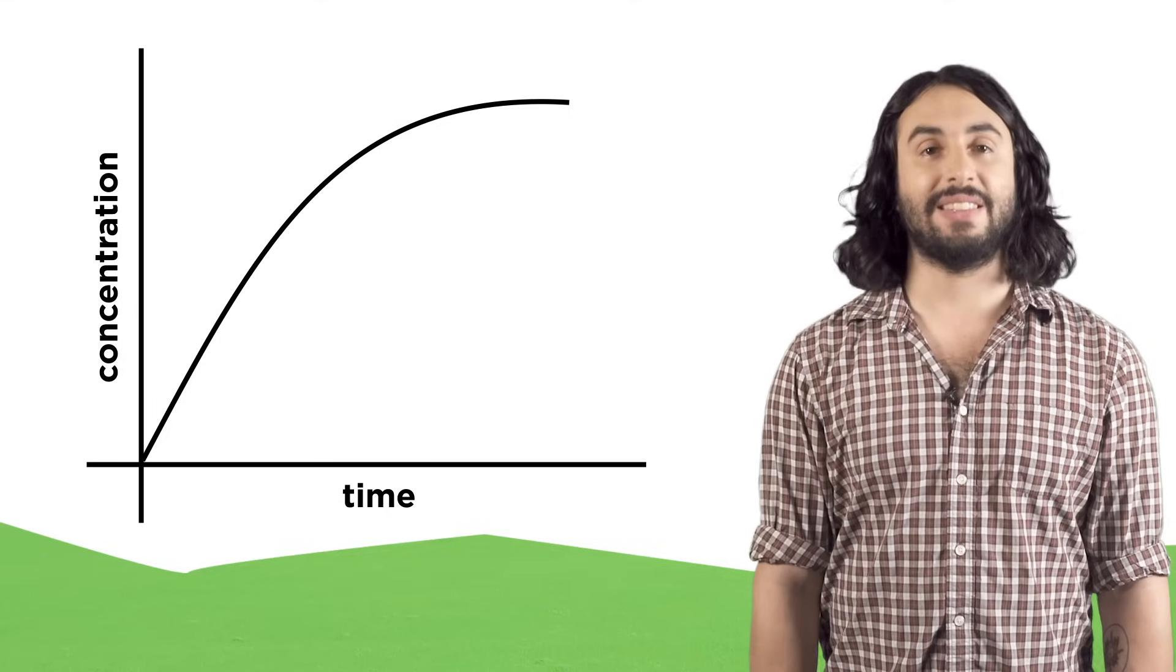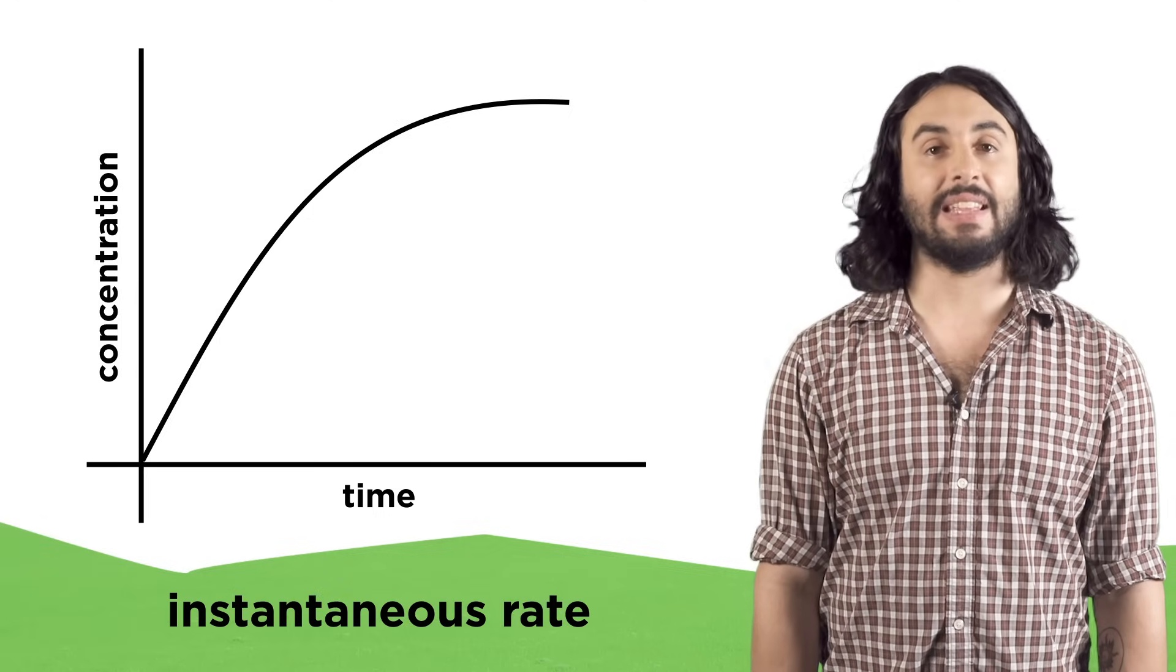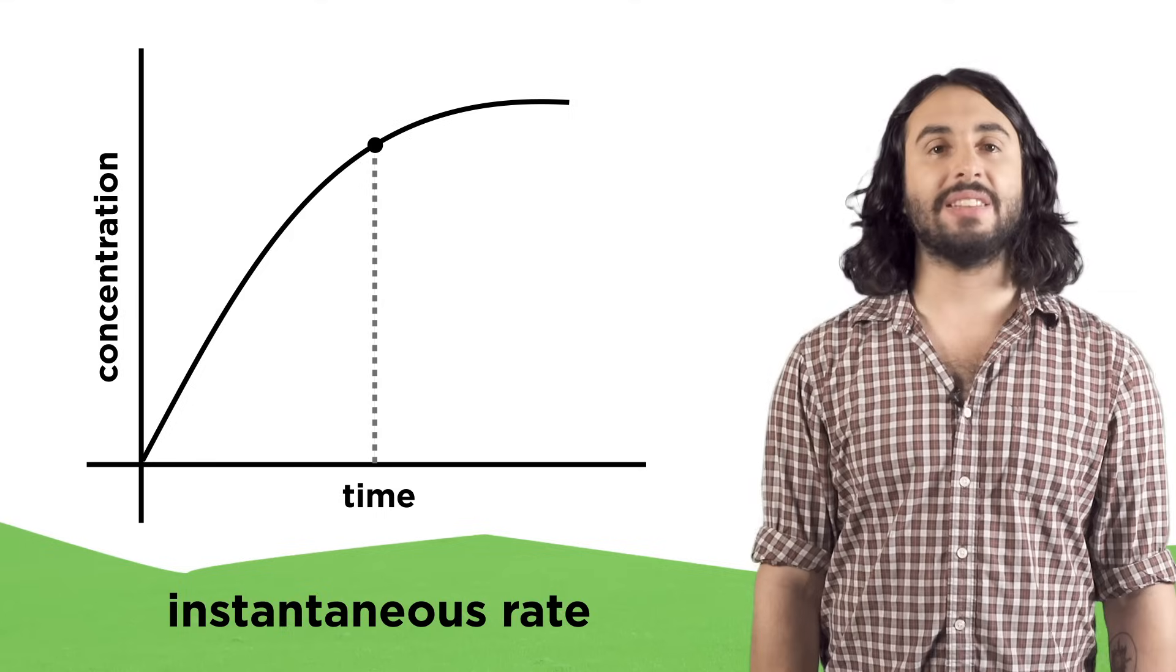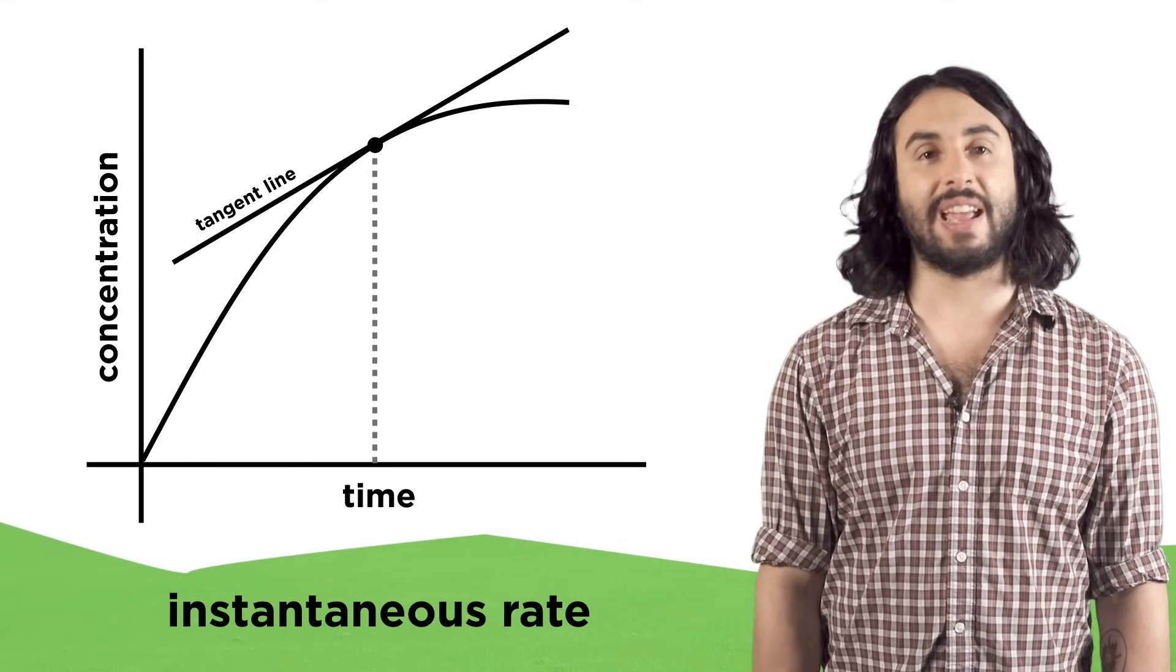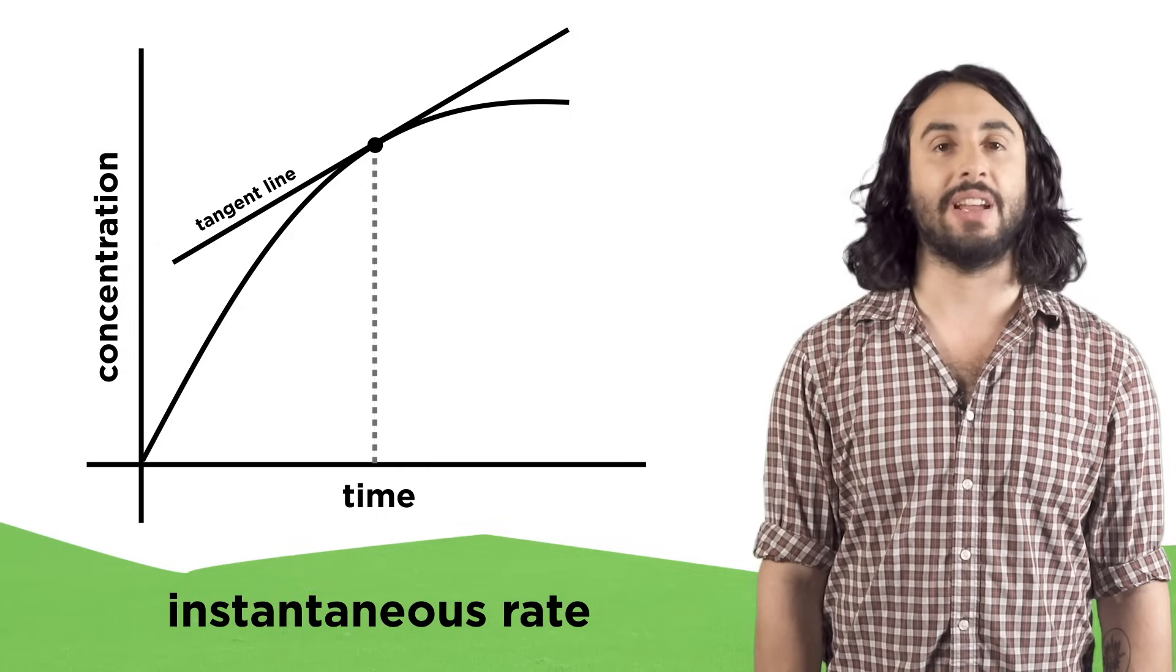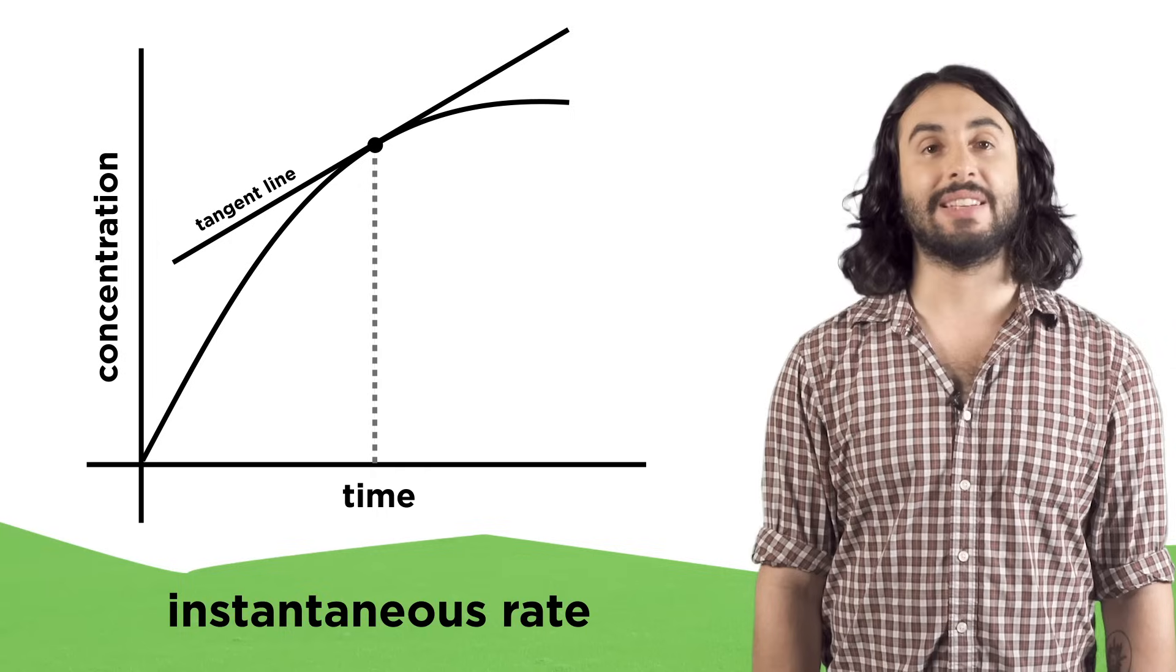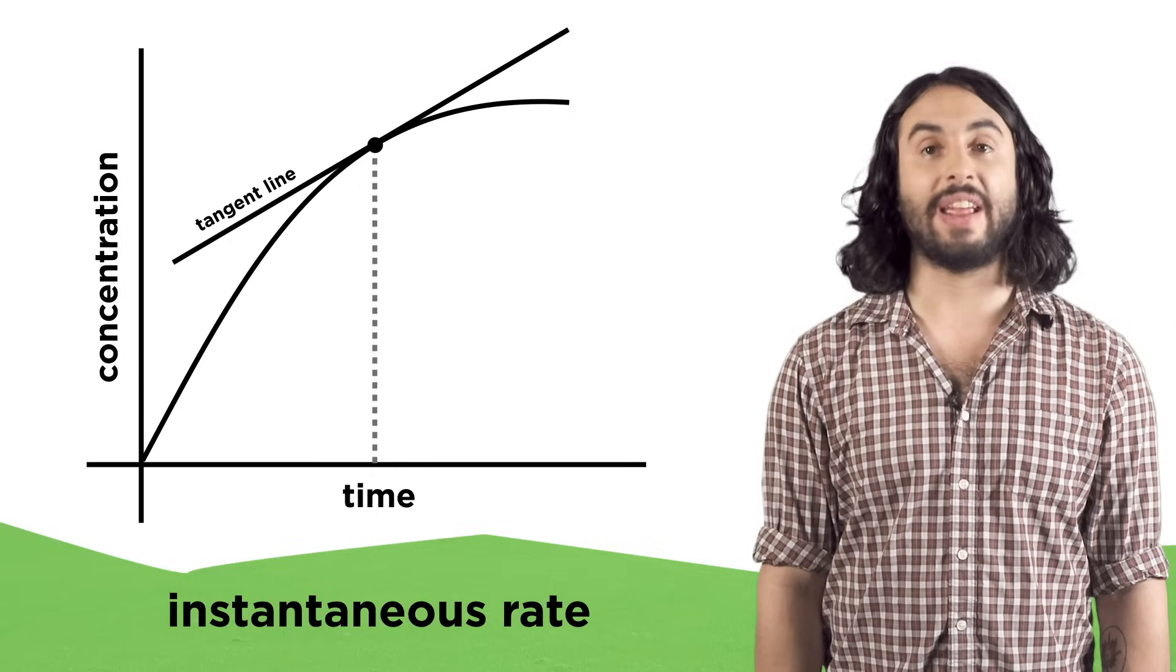When looking at this data we can calculate the instantaneous rate, which is the rate at any given moment. We do this by looking at the slope of the tangent line at a point, or the line that just touches an individual point on the line. This is more precise than taking an average value over a range of points.